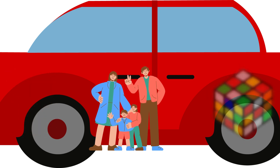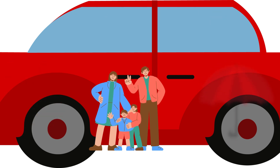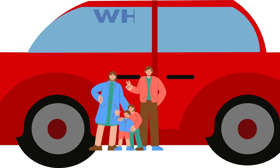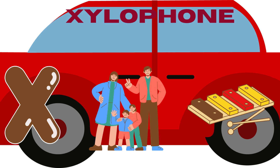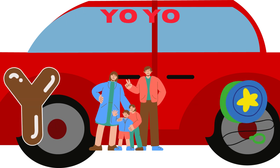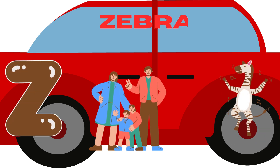...toy, U for umbrella, V for van, W for whale, X for xylophone, Y for yoyo, Z for zebra.